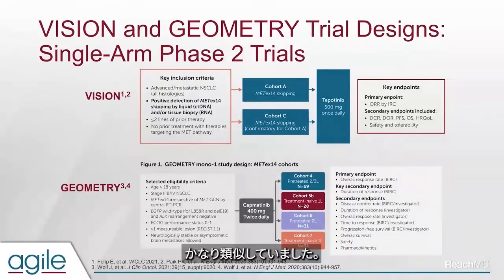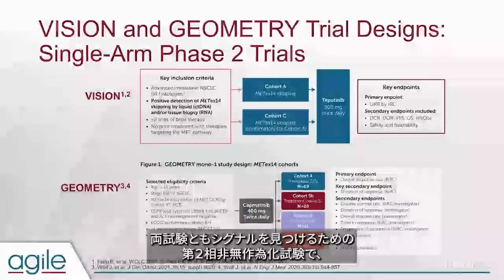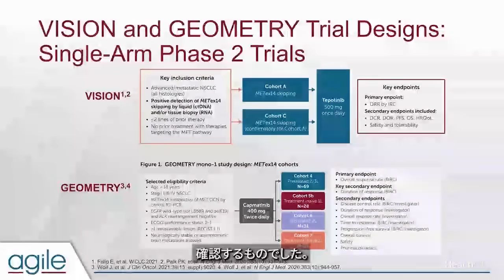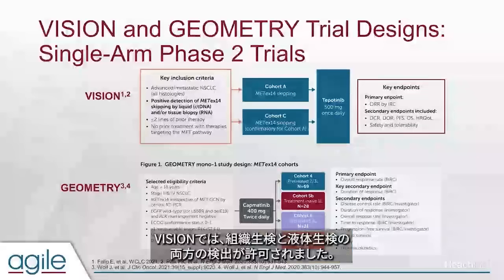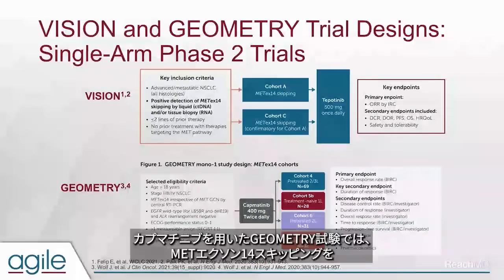That fourth part addressed MET amplification in both primary and acquired resistance settings. Most of the discussion was about the FDA-approved indications for tepotinib and capmatinib. The studies that led to their approval were called VISION and GEOMETRY, respectively. They were both signal-finding phase two non-randomized studies using overall response rate as the primary endpoint. Everyone had to have MET exon-14 skipping, though detection methods differed: VISION allowed tissue and liquid biopsy, while GEOMETRY required tissue or tumor testing only.